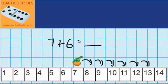We've got 1, 2, 3, 4, 5, 6. Perfect. So 7 plus 6 equals 13.